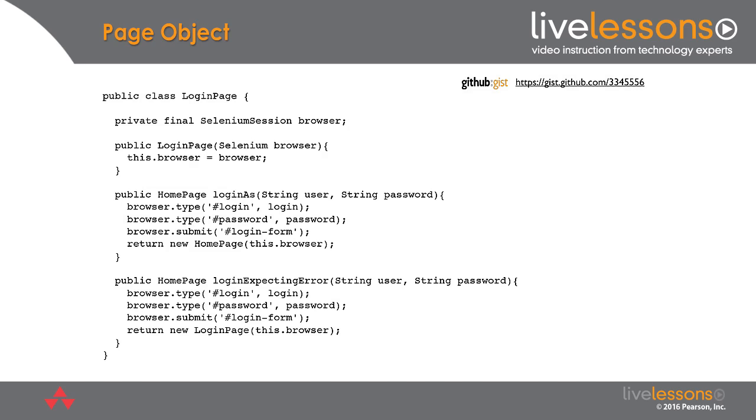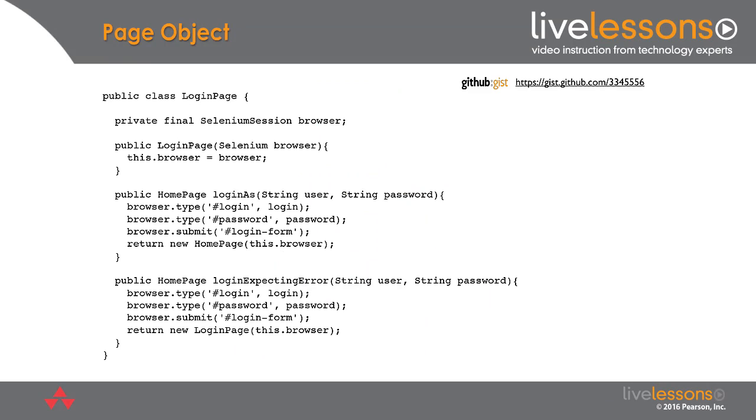So in the page object pattern we write a separate class for every page in the system that we want to interact with. This example is for a login page. We have a method to log in with the username and password and then we have another method to log in where we're expecting an error where again we pass in the username and the password. And the idea here is to make sure that if we make changes to the UI of the system under test we only need to change our test code in one place right here.